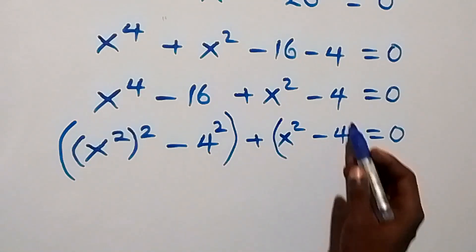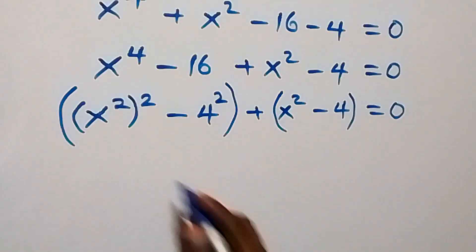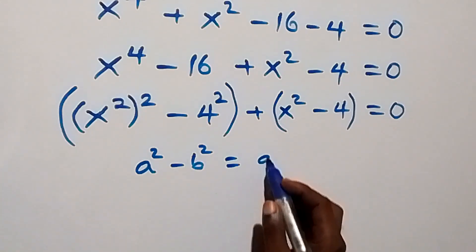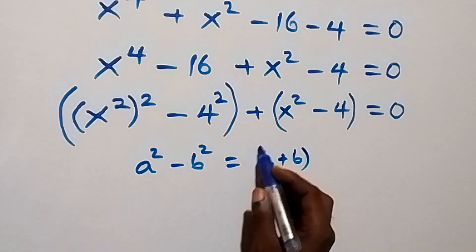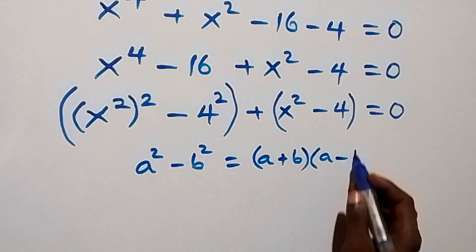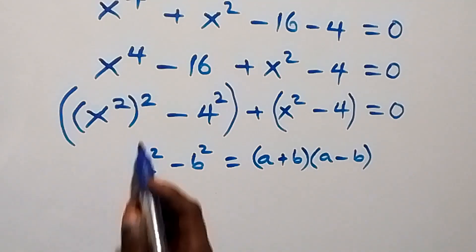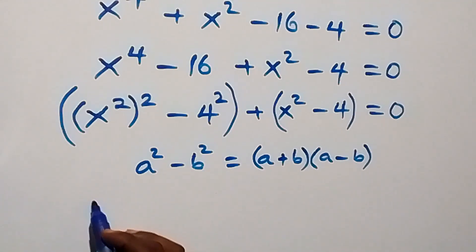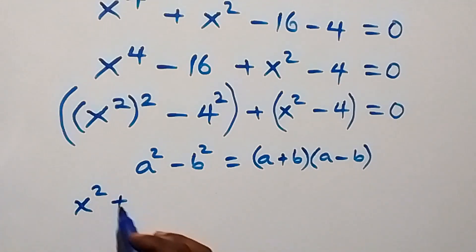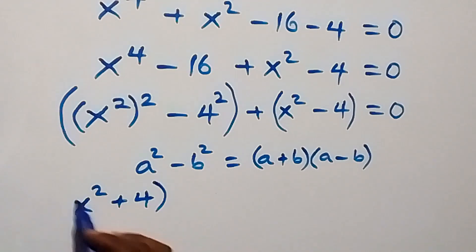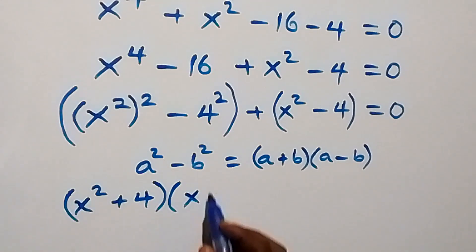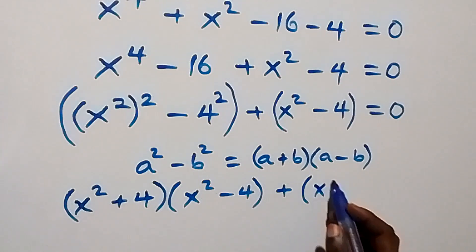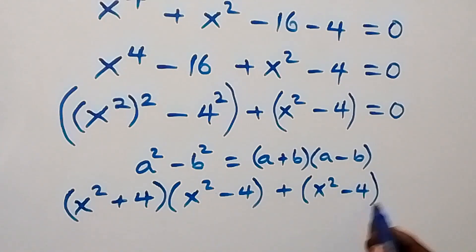Now grouping together and applying the difference of squares — a squared minus b squared equals a plus b times a minus b — with x squared serving as a and 4 serving as b, this becomes x squared plus 4 multiplied by x squared minus 4, plus x squared minus 4, equals zero.